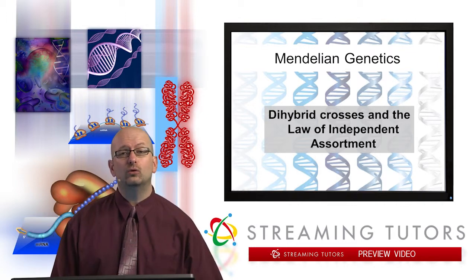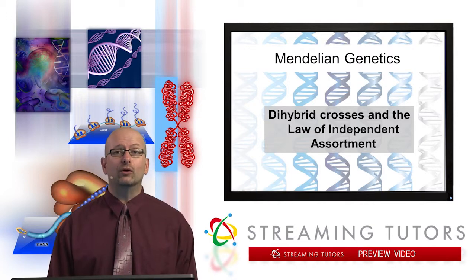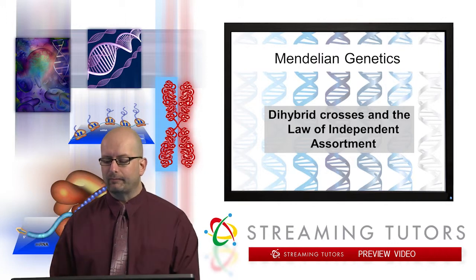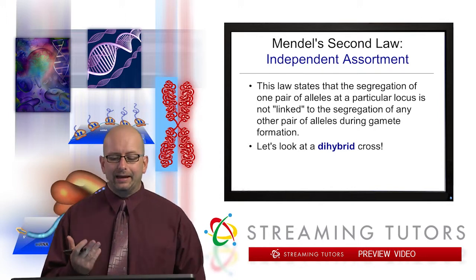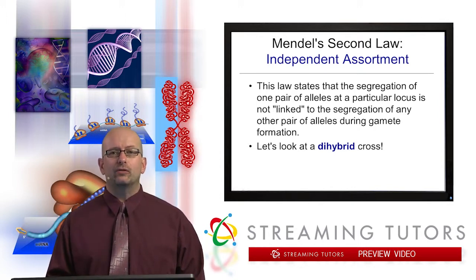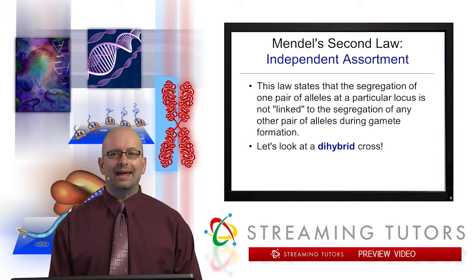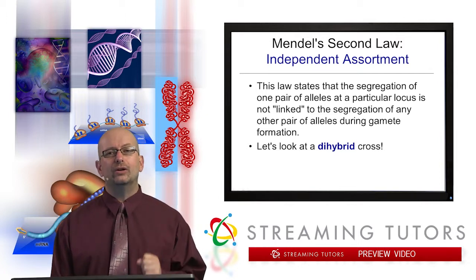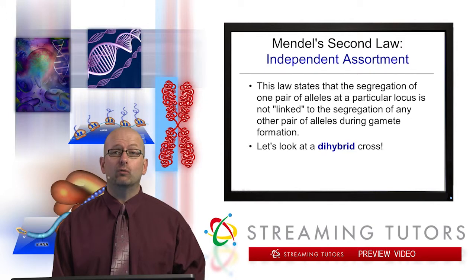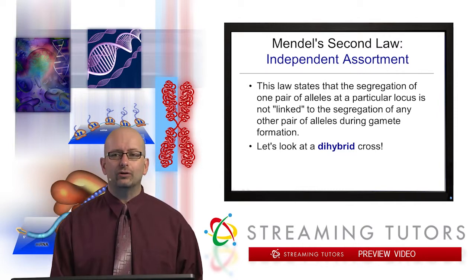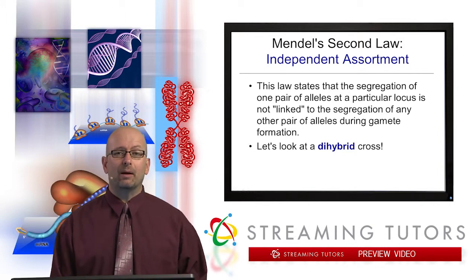We do want to relate this to what has been said about the law of segregation, Mendel's first law, and monohybrid crosses as well. So Mendel's second law, independent assortment — you can see right on the screen, I'm just going to read you the definition. It's a little bit lengthy and wordy, but we're going to dissect it after. This law states that the segregation or separation of one pair of alleles at a particular locus is not linked to the segregation of any other pair of alleles during gamete formation. So that certainly is a mouthful.